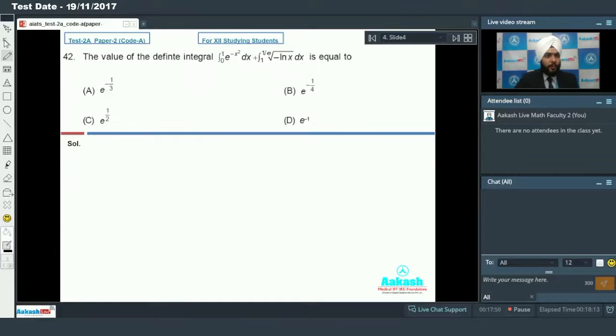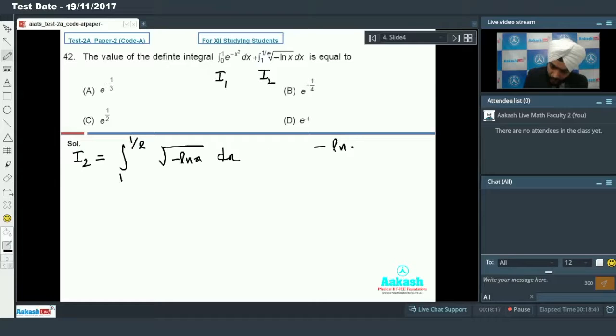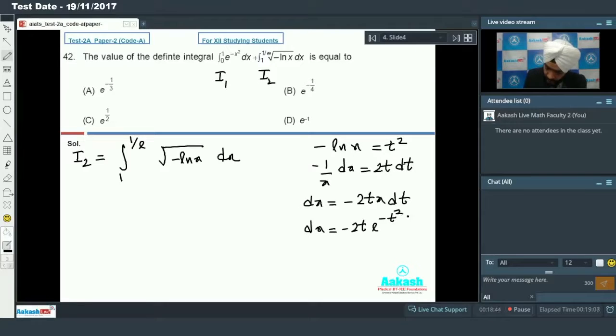Let us move on to question number 42. The value of integral 0 to e, e to the power minus x square dx plus 1 to 1 by e, under root of minus ln x dx is equal to what? This will be i1 and this will be i2. For i2, 1 to 1 by e under root of minus ln x dx, if I take minus ln x as t square, then minus 1 by x dx equals 2t dt. So dx will be minus 2t dx dt. Now x will be e raised to power minus t square.